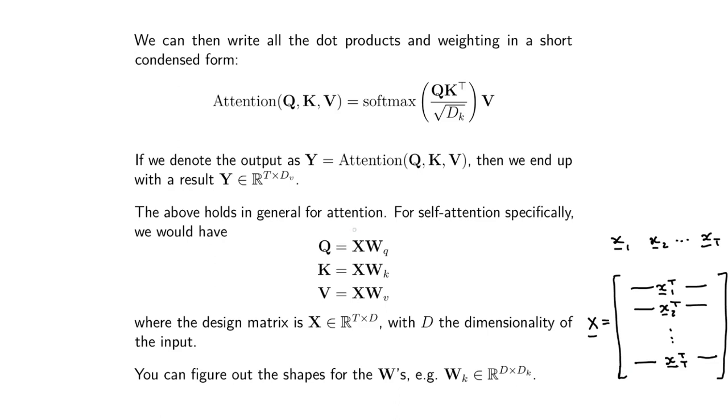Then what you can do is you can calculate all the queries by just multiplying your design matrix with your query matrix. You can calculate all the keys by just multiplying the design matrix with the key matrix, all the value vectors, multiplying the design matrix with the value matrix, and you can do all of that directly in matrix form.